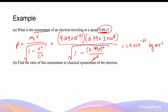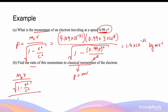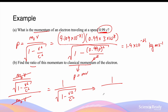Find the ratio of this momentum to the classical momentum of the electron. The classical momentum is given by p equals mv. So this ratio would be the relativistic momentum expression — m0 times v divided by the square root of 1 minus v squared over c squared — divided by the classical momentum m0v. The m0v terms cancel, giving 1 divided by the square root of 1 minus v squared over c squared. This gives 1 divided by the square root of 1 minus 0.99 squared, which simplifies to 7.1. So the relativistic momentum to the classical momentum is in a ratio of roughly 7.1 to 1. This concludes the video on relativistic momentum.